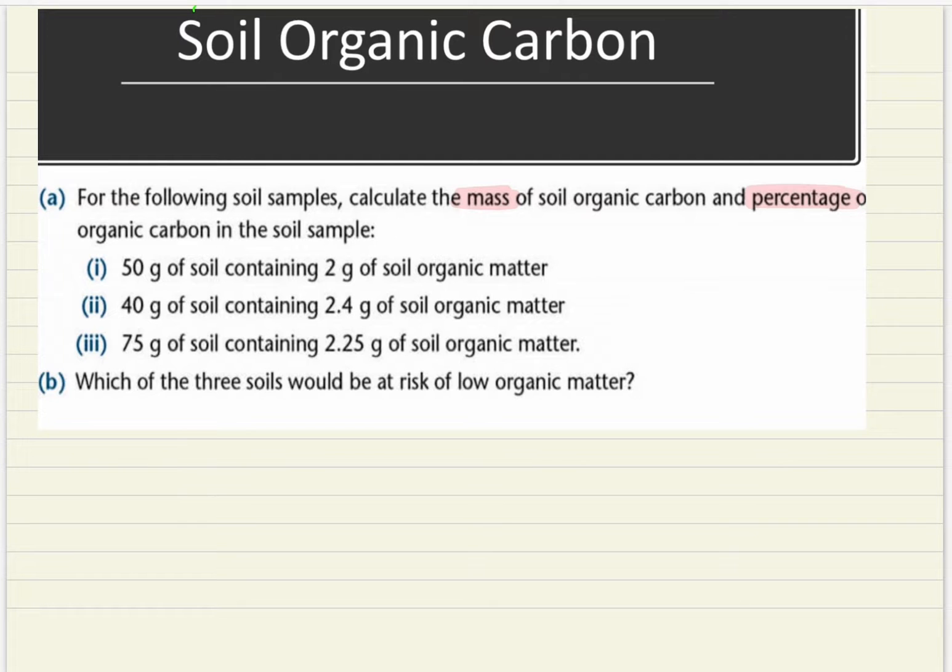If they're just asking you for the mass of soil organic carbon, all you're going to do is multiply the mass of soil organic matter by 0.58. So for example one, it should be 2 grams multiplied by 0.58 and that'd be 0.116 grams of soil organic carbon.